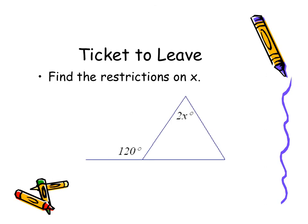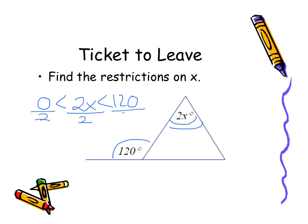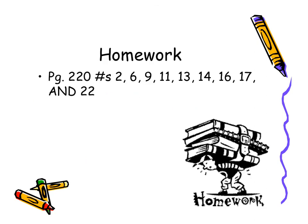If you need to try another exterior angle inequality theorem problem, there's one here for you — pause it, try it, then press play for the explanation. The exterior angle is 120 degrees, so 2x is less than 120, giving an upper limit. The lower limit is that 2x must be greater than 0. Dividing by 2 on everything gives x is greater than 0 but less than 60 — those are the restrictions on x. Here's your homework. Tomorrow we'll be reviewing and then the next day we'll have our test.